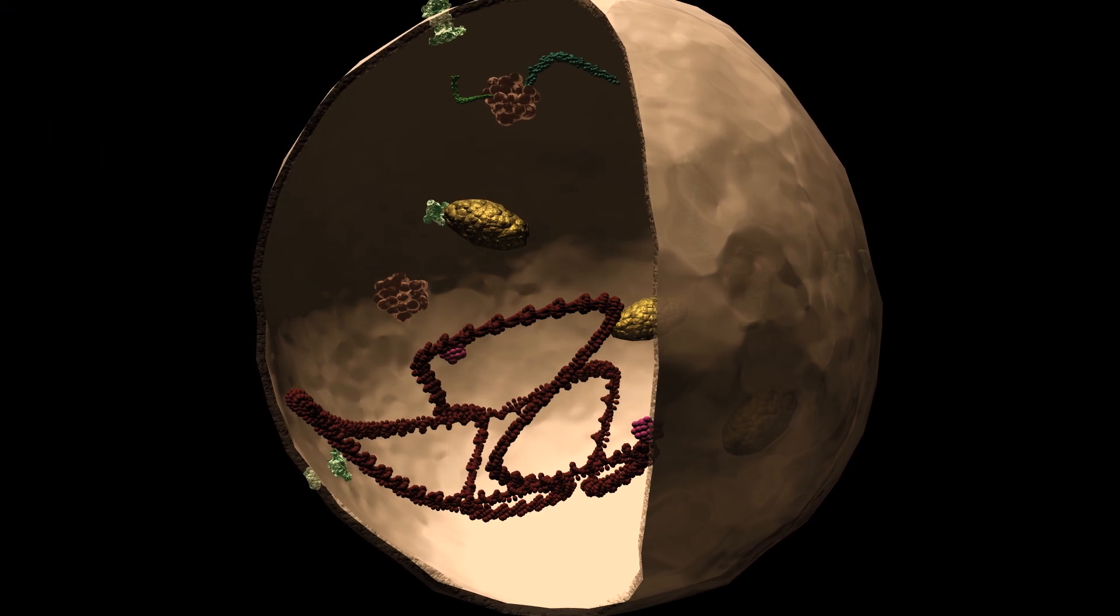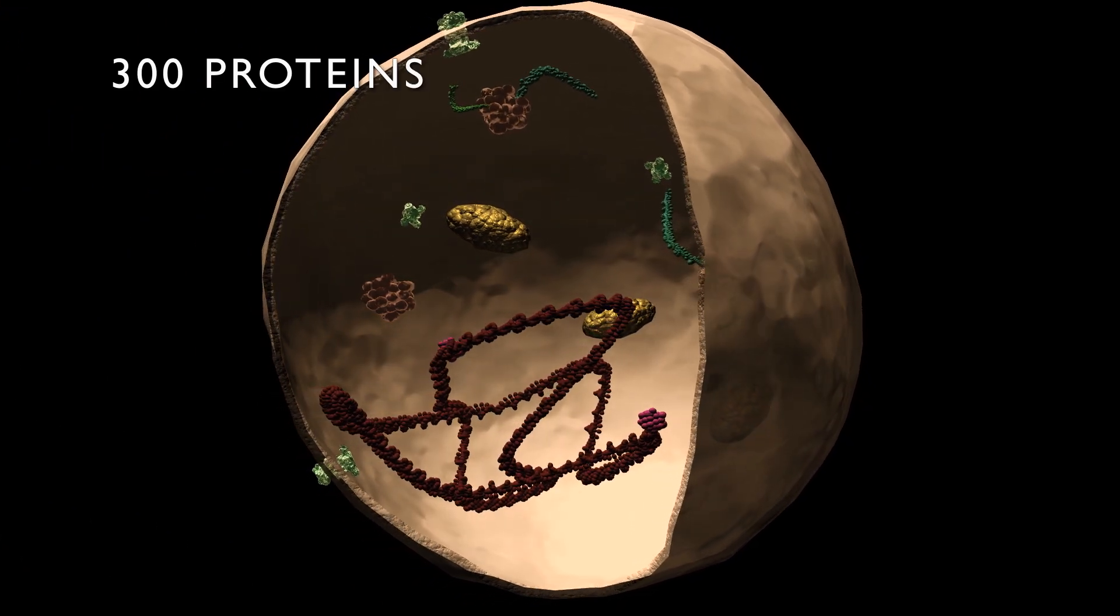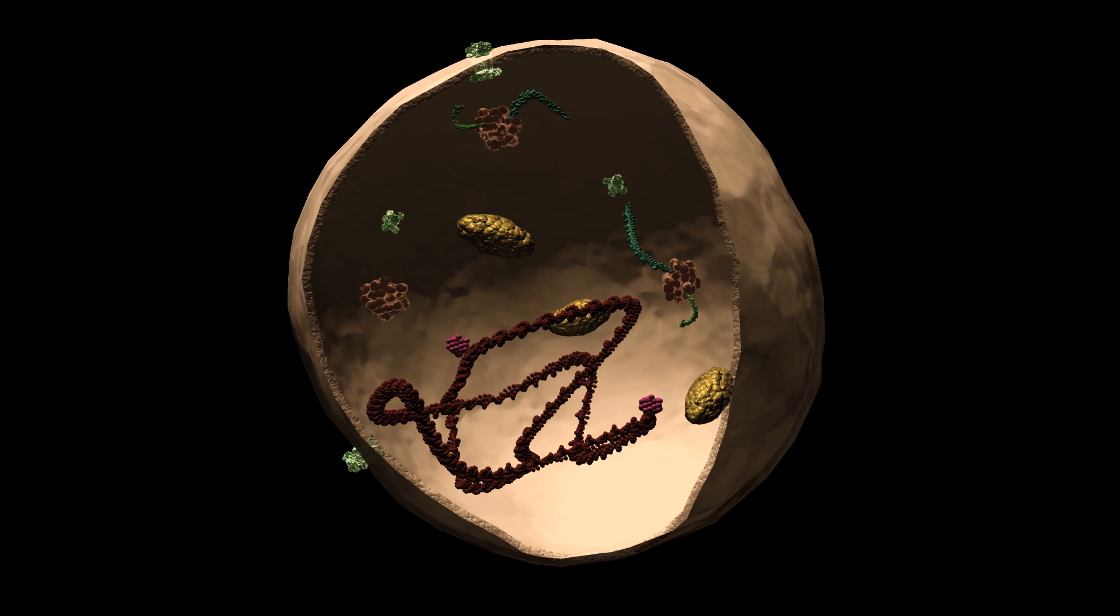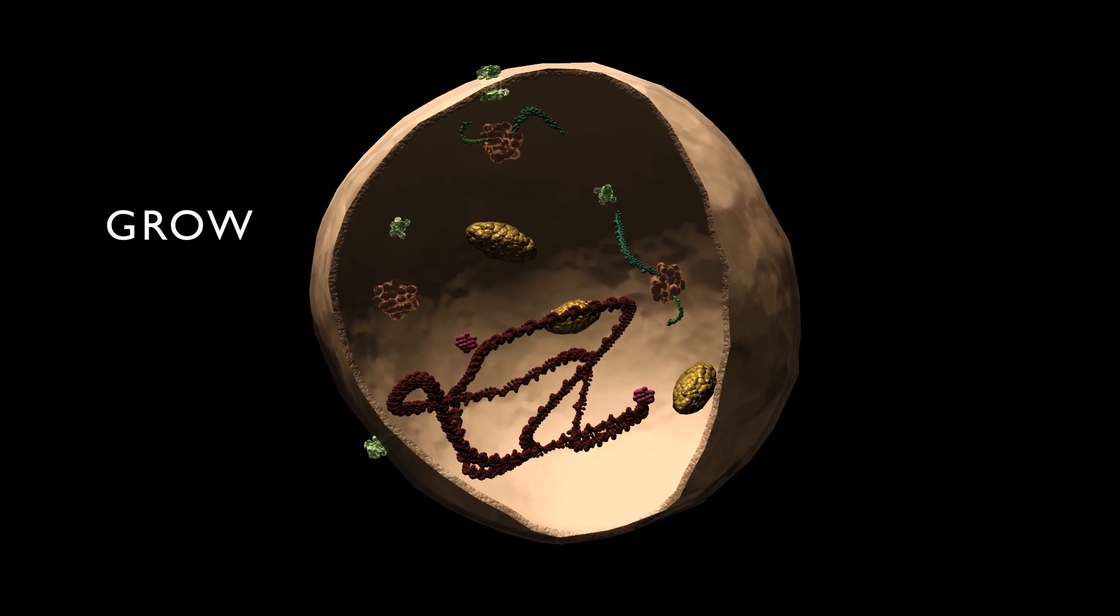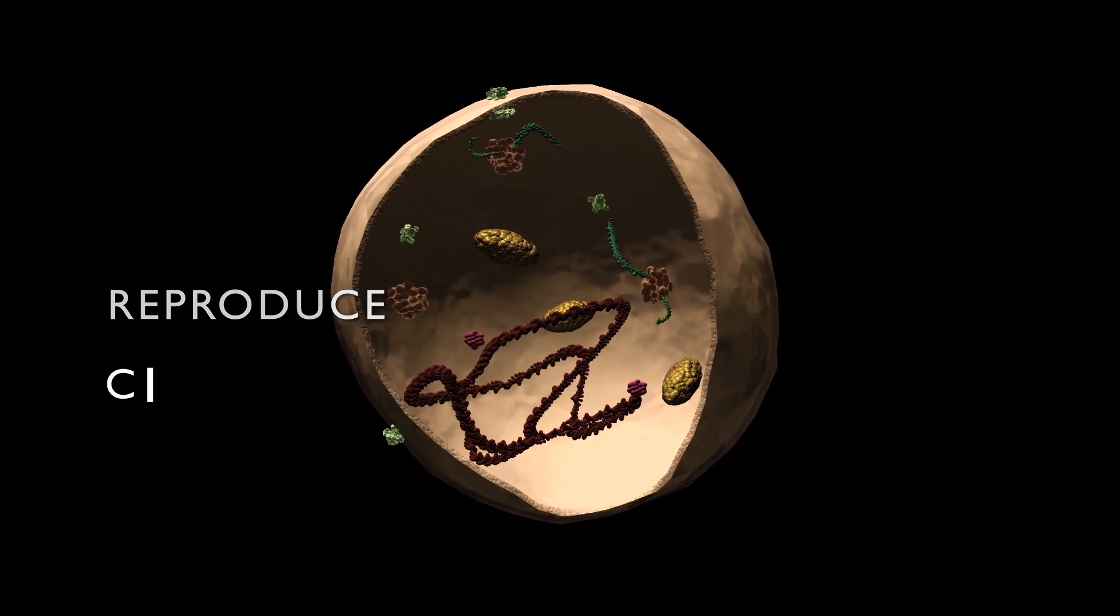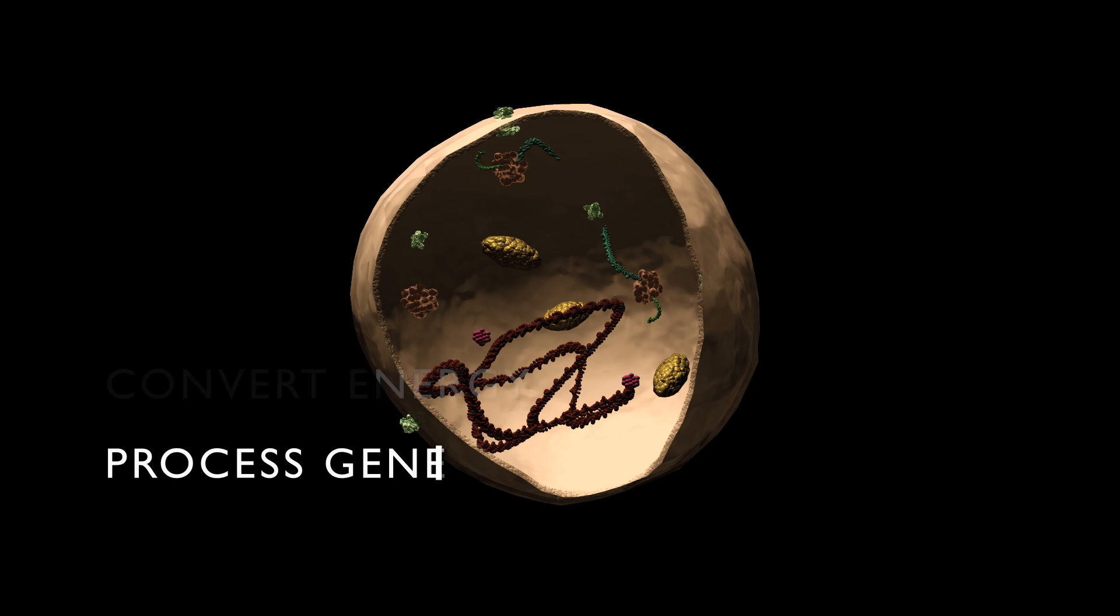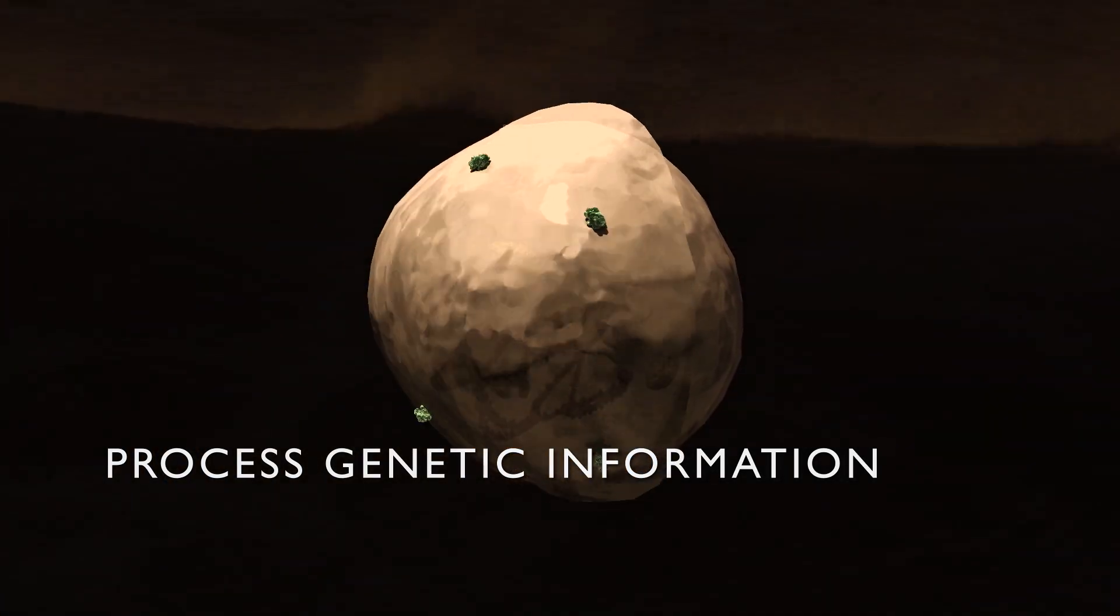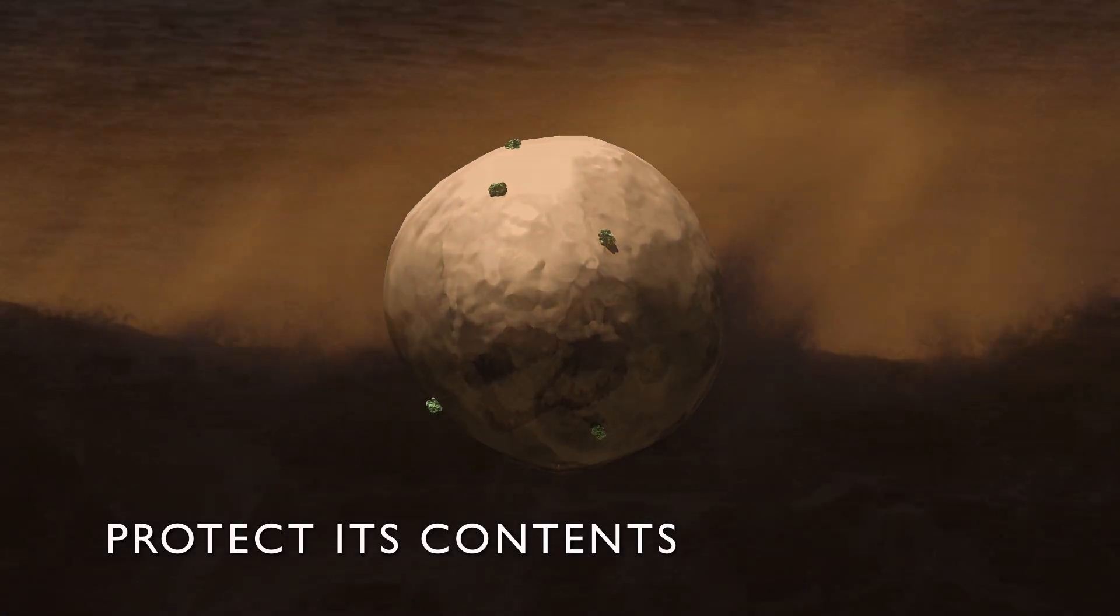The simplest living cell contains at least 300 different types of proteins and the biological machinery necessary to grow, reproduce, convert energy, store and process genetic information, and protect its contents from the outside world.